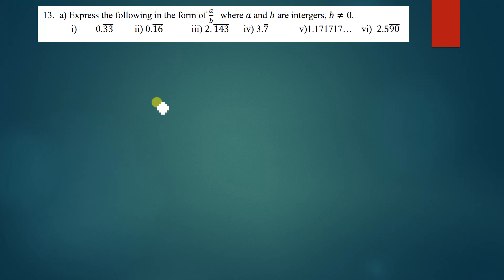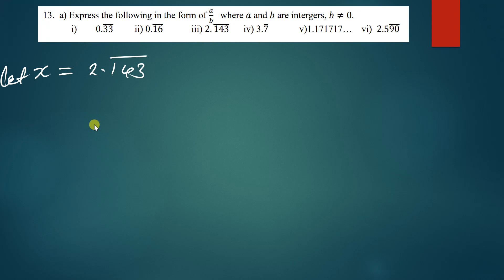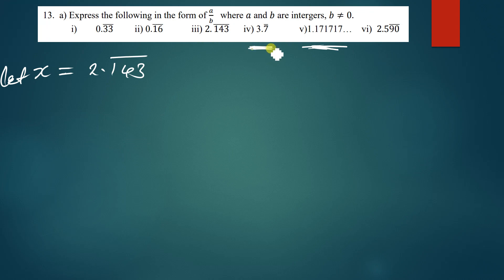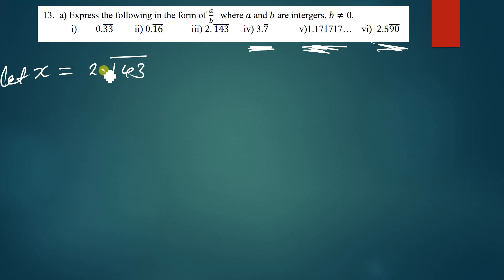Next question: let x equal 2.143̄, where 143 is the repeating block. I'll leave questions 4 and 5 as practice for you — you can send me your solutions to check. For this question, we have three repeating digits, so we multiply by 1000, giving 1000x = 2143.143̄.